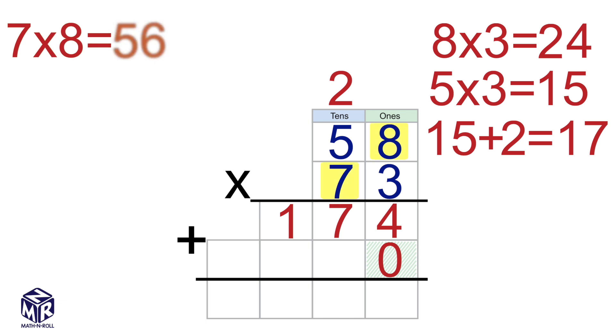7 times 8 equals 56. 56 doesn't fit into the tens column, so we write the 6 in the tens column, and the 5 goes above the 2. We cross out the 2 because we already used it.